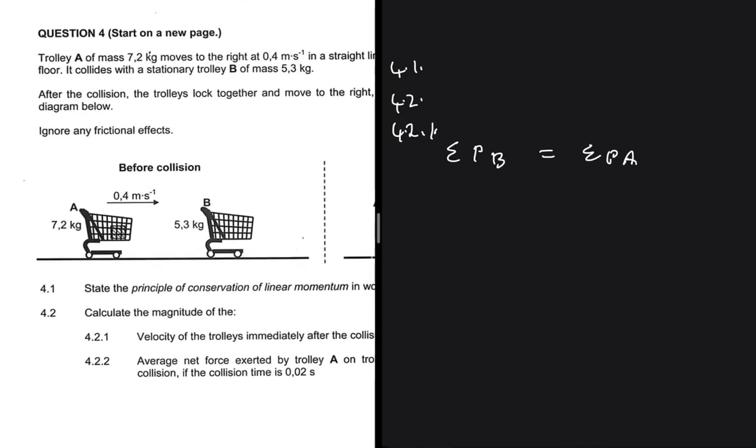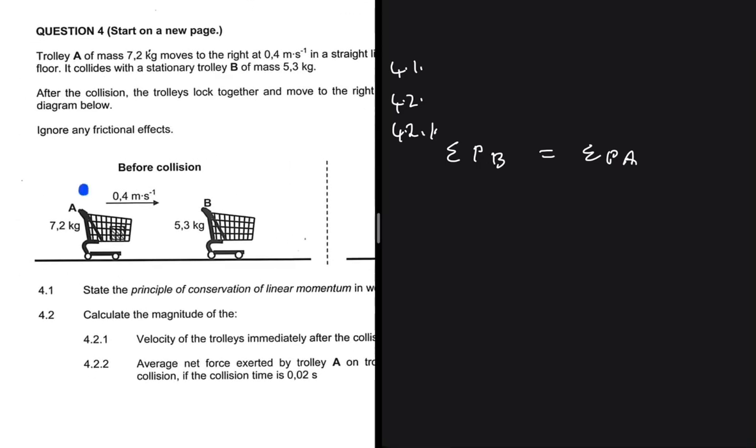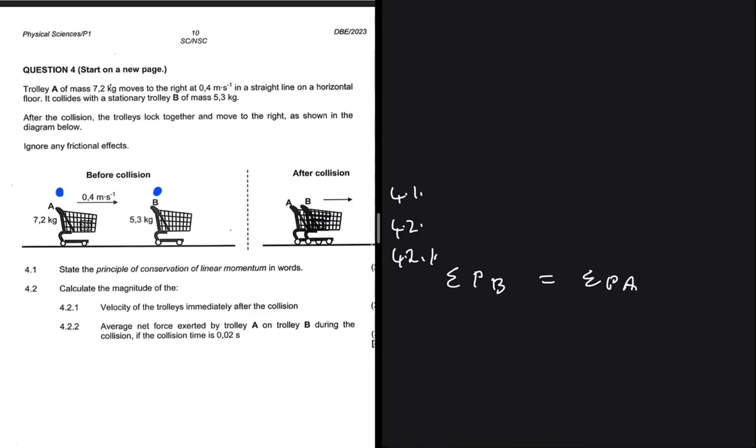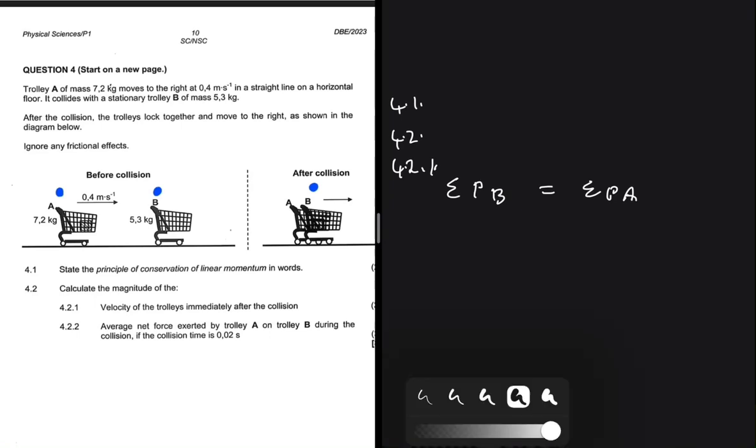For our case here, we have trolley A, which is moving to the right, and we have trolley B, which is stationary. After they collide, they move together as one unit.